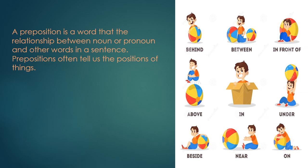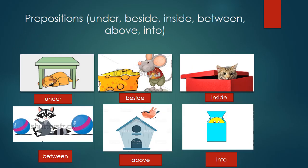For example, if I say 'the boy is behind the ball,' the word 'behind' tells us the position of things, and it also makes the relationship between two nouns — boy and ball.